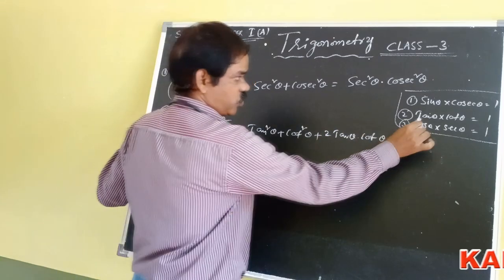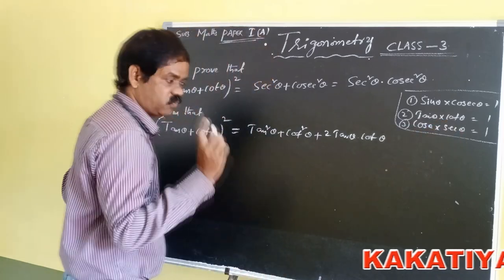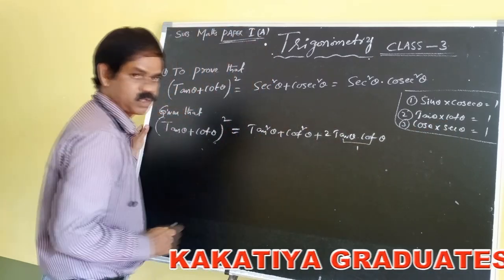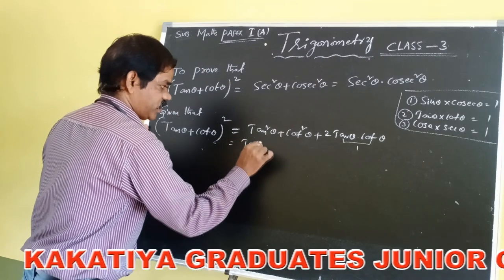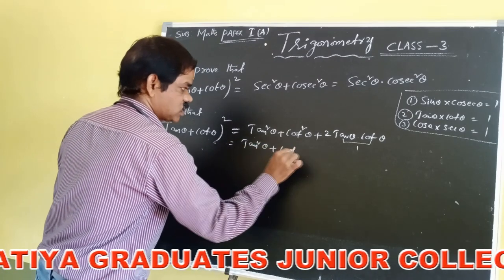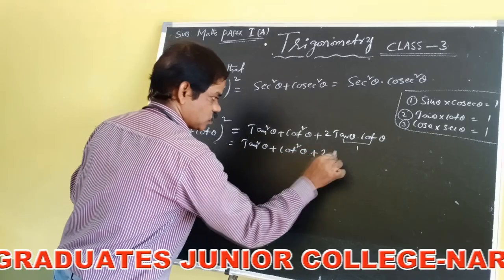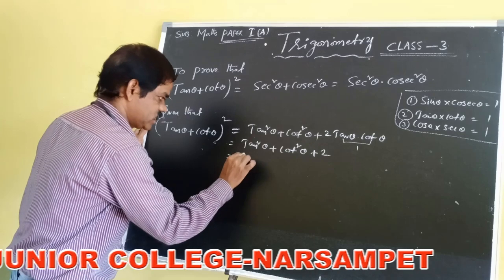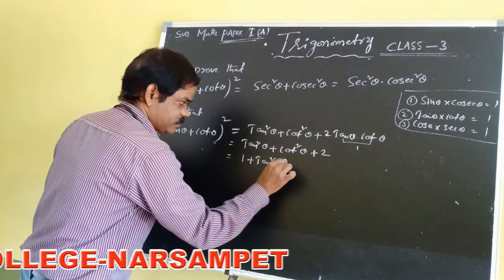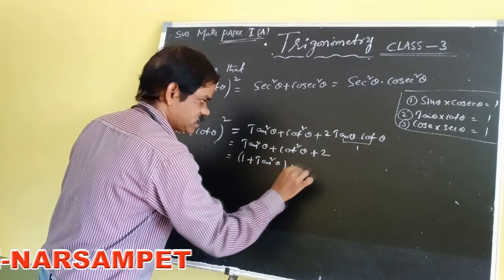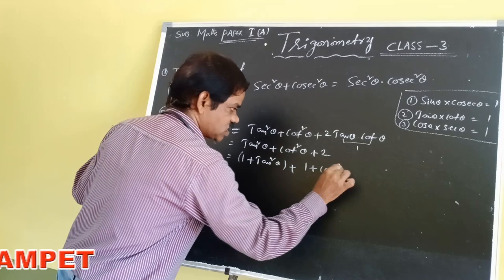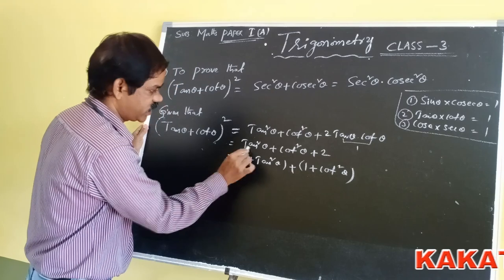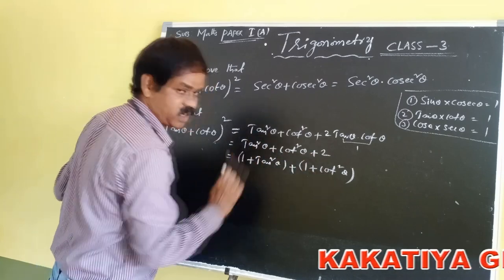We know that tan theta into cot theta equals 1. So 1 into 2 is equals to 2. Therefore we have tan square theta plus cot square theta plus 2. Next, we write this 2 as 1 plus 1, giving us 1 plus tan square theta and plus 1 plus cot square theta. That means we have split the 2 into 1 for tan square theta and 1 for cot square theta.